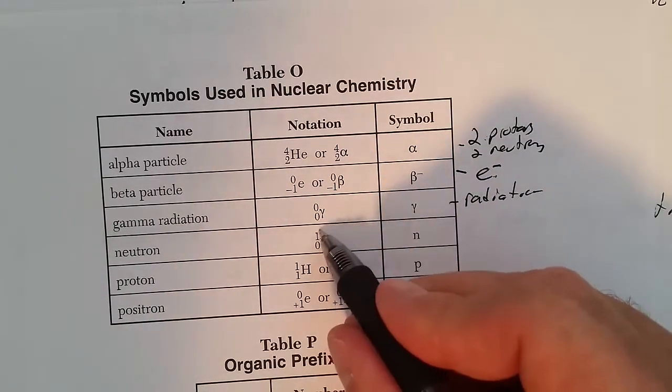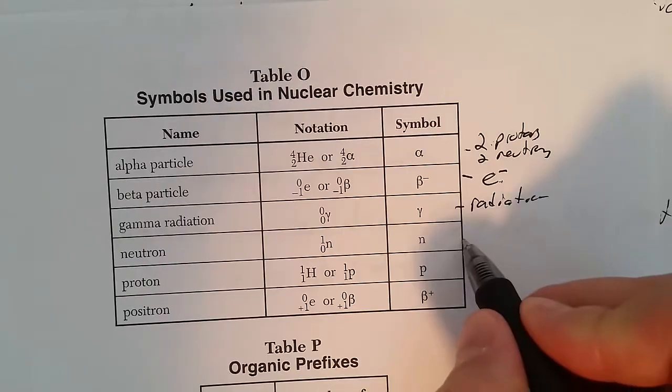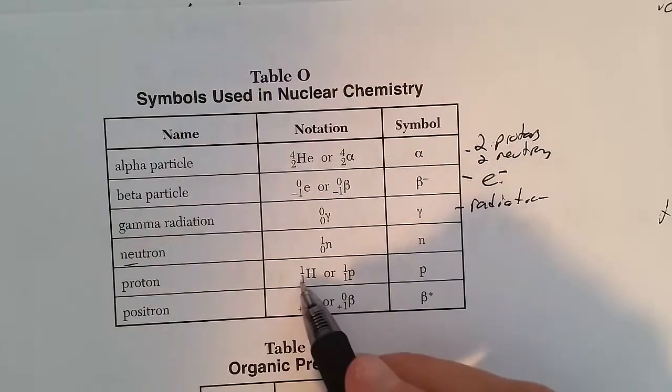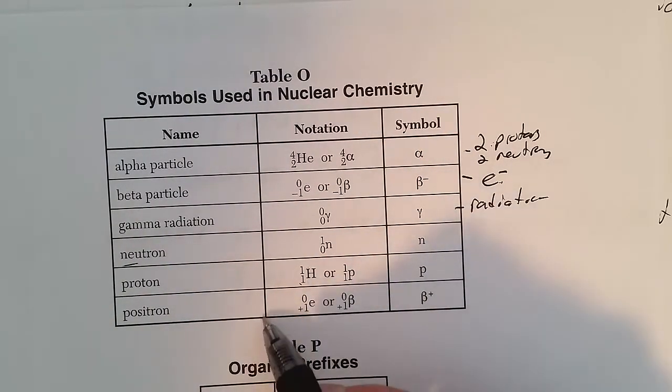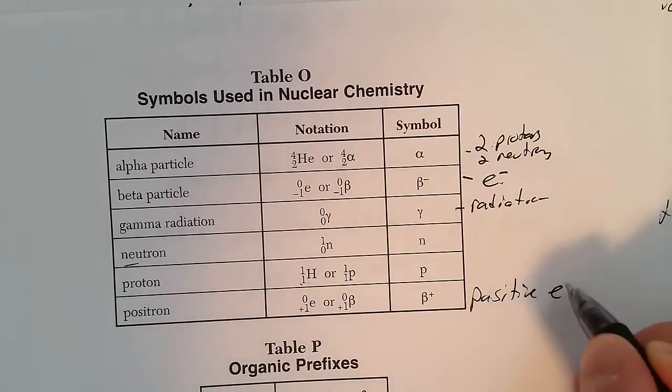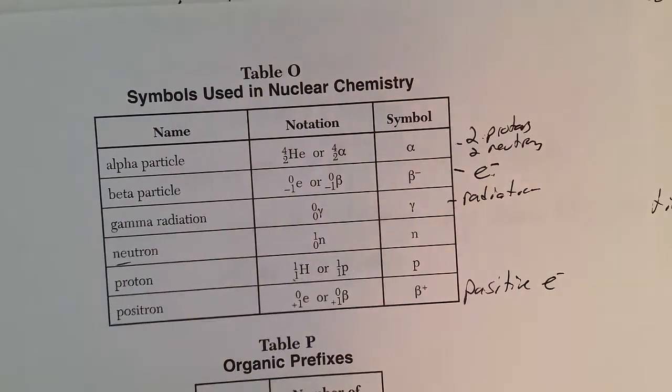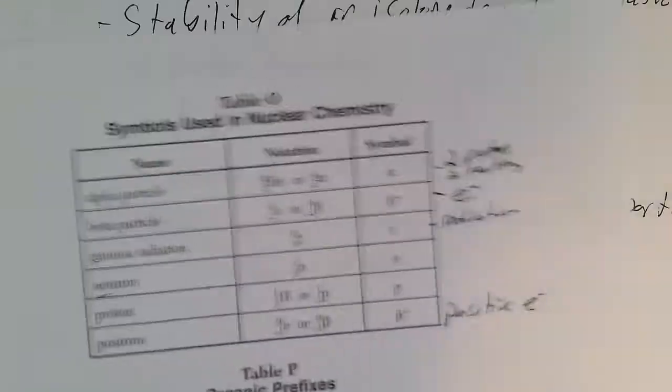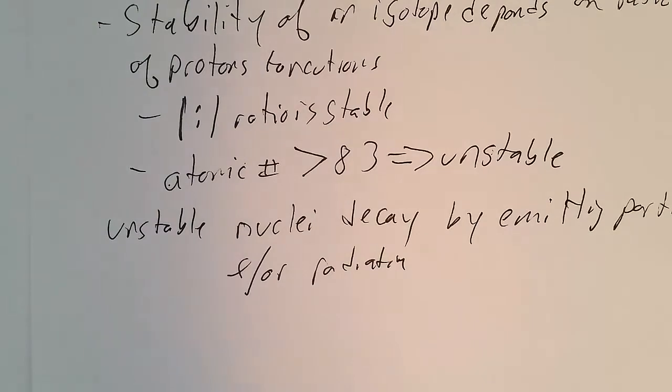A neutron has a mass of 1 and a charge of 0. A proton has a mass of 1, charge of 1. A positron is a positive electron. We'll talk about those types of emission in a little bit.